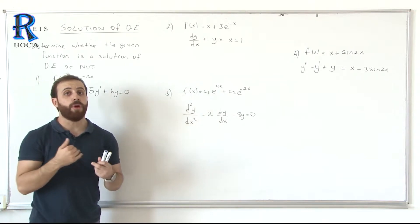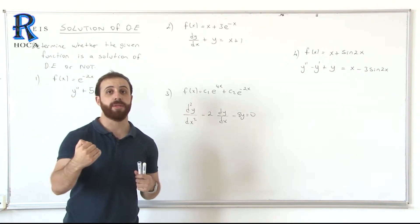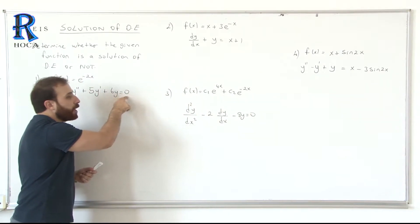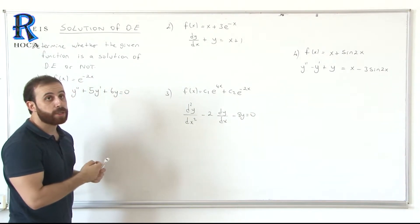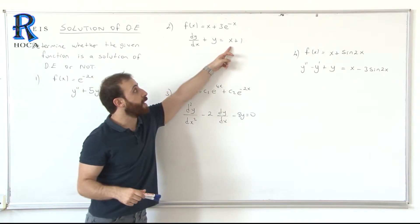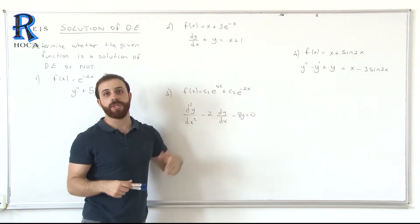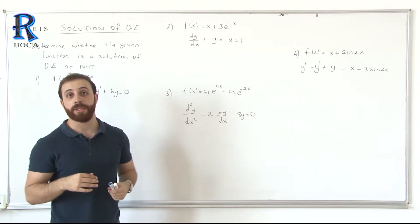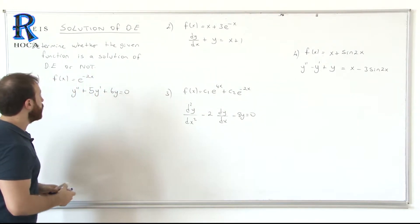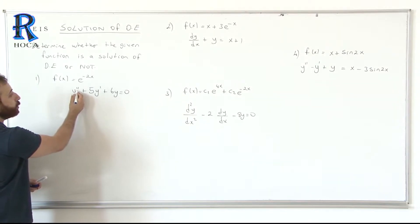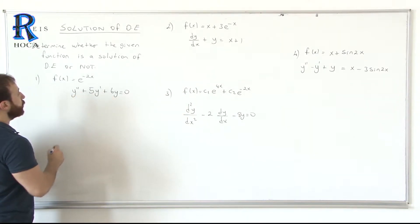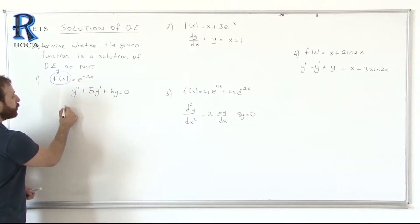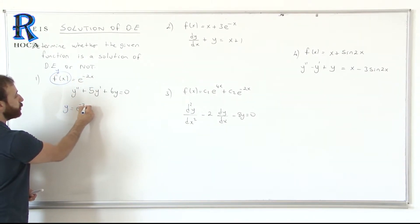Don't always think we equalize the equation to 0 — here it is 0, that's why we will check if it is equal to 0 or not. In another question the right side is x plus 1, and we check if the left side equals x plus 1 or not. We know that f(x) is y, so let's check: y equals e^(-2x).